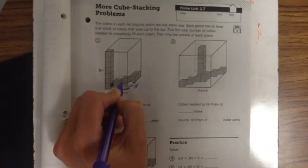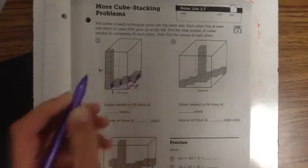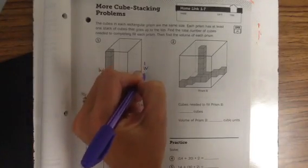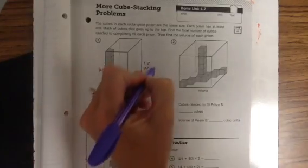So our width is going to be 1, 2, 3, 4, 5. I told them go ahead and label each of those. So our width is 5.